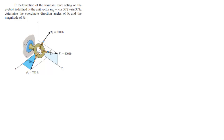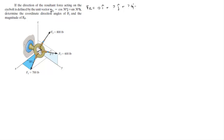We're going to do this very complicated problem in which the direction of the resultant force acting on the eyebolt is defined by a unit vector. We need to determine the coordinate direction angles of F3 and the magnitude of FR. Since the unit vector only has j and k components — cosine of 30 in j and sine of 30 in k — the resultant force has 0i, meaning no x-magnitude.